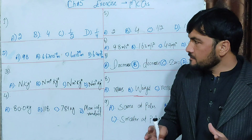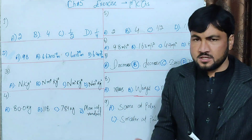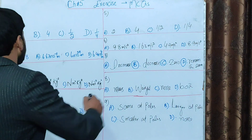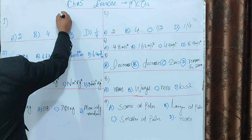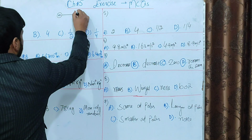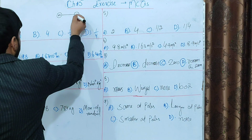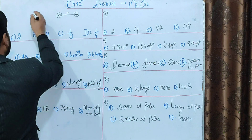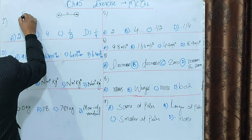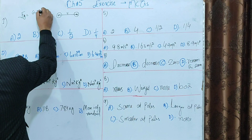The force of attraction will be changed by the same factor. The masses are M1 and M2, and the distance is R. The gravitational force FG involves M1 and M2.